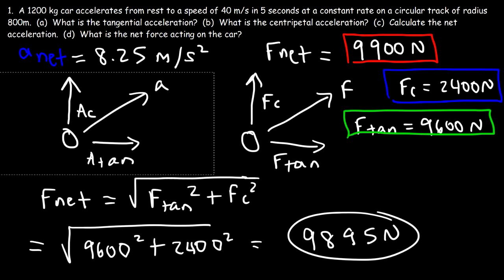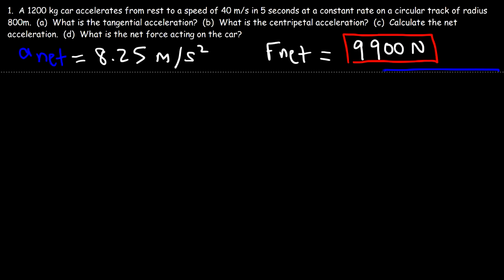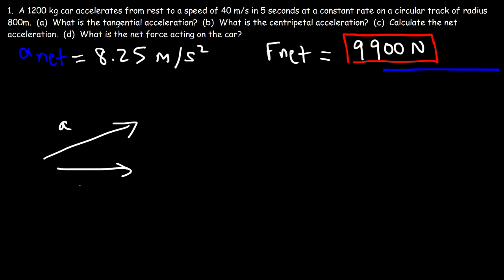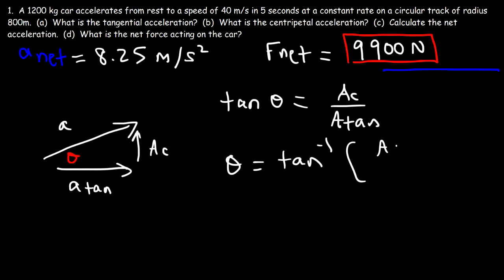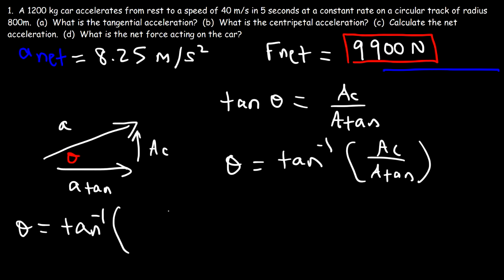There's one more thing to discuss — sometimes you need to find the angle that the acceleration vector makes with the x-axis. The tangent of that angle equals the y-component divided by the x-component. So the angle is the arc tangent of the centripetal acceleration divided by the tangential acceleration. In our example, that's arc tangent of 2 over 8, or arc tangent of 1/4, giving an angle of 14.04 degrees.